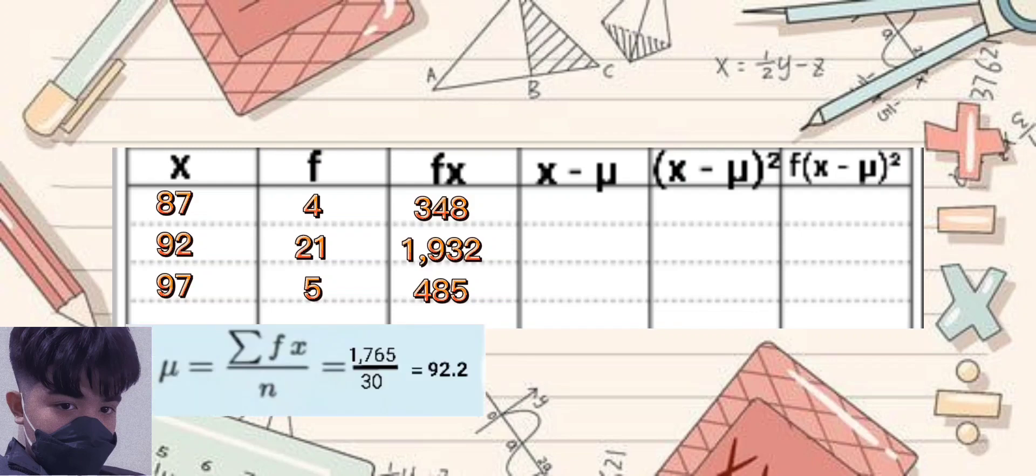And to get the mean, we have to divide all sets of data in third column to the total number of the second column. And here in our data, we will get 92.2 as the mean.